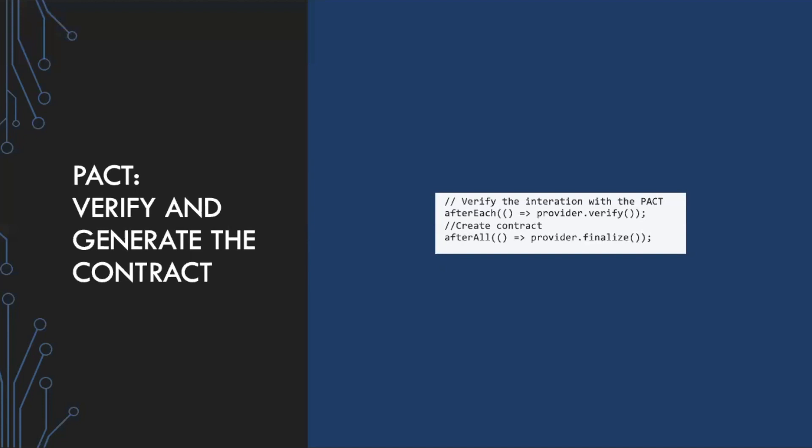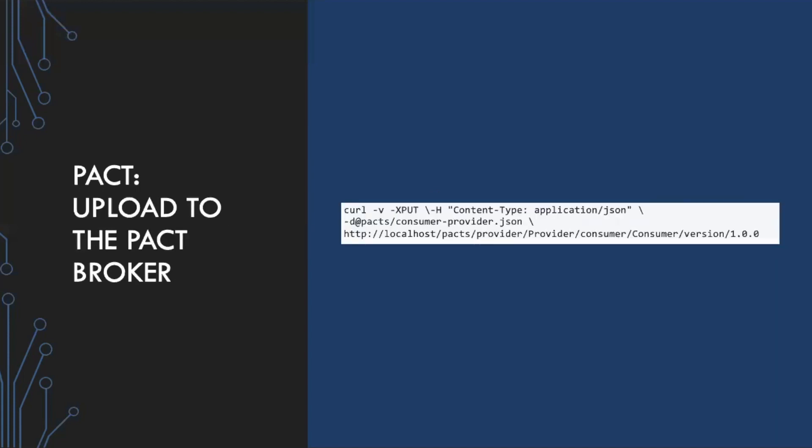If it matches, it'll move to the finalized step and will generate the contract. If it fails, no contract will be generated. After our contract is generated, we need to upload it to what's called a PACT broker. A PACT broker is where we store all of our contracts across all services, and it's the location that the provider test will target to consume the contract for its own tests.